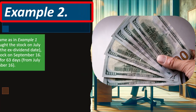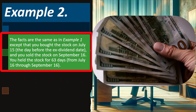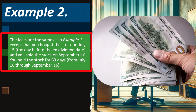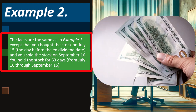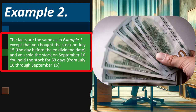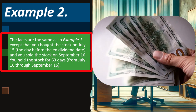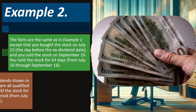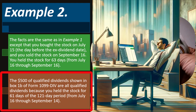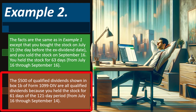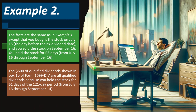Example two: Same facts as example one, except you bought the stock on July 15th — the day before the ex-dividend date — and sold on September 16th. You held the stock for 63 days from July 16th to September 16th. The $500 of qualified dividends shown in box 1B of Form 1099-DIV are all qualified dividends because you held the stock for 61 days of the 121-day period.